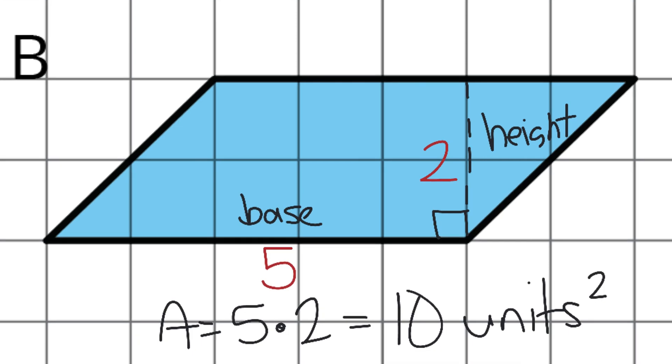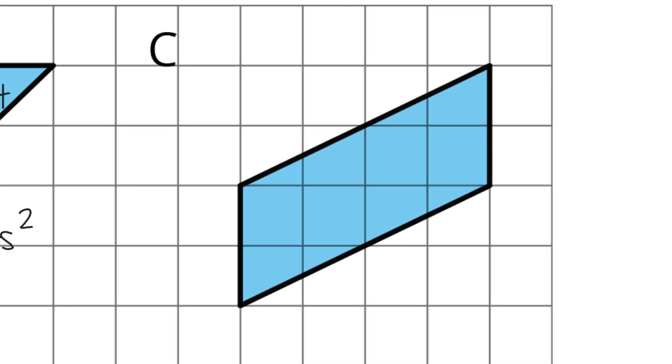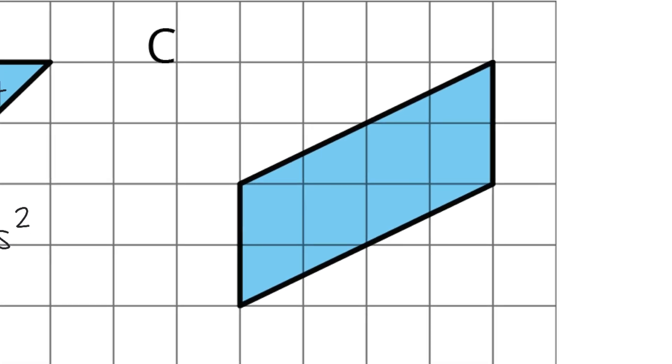Let's move on to C. Now, your base doesn't always have to be the bottom. Again, I repeat, the base doesn't always have to be the bottom side. And so I could label this right here as my base. Which means this side coming up to meet the two bases, this would be my height.